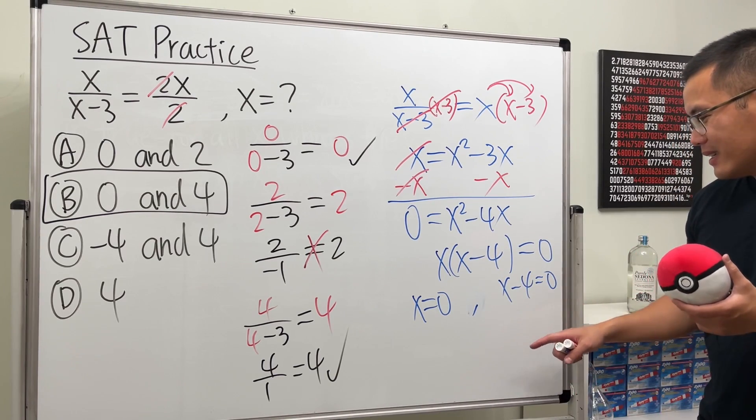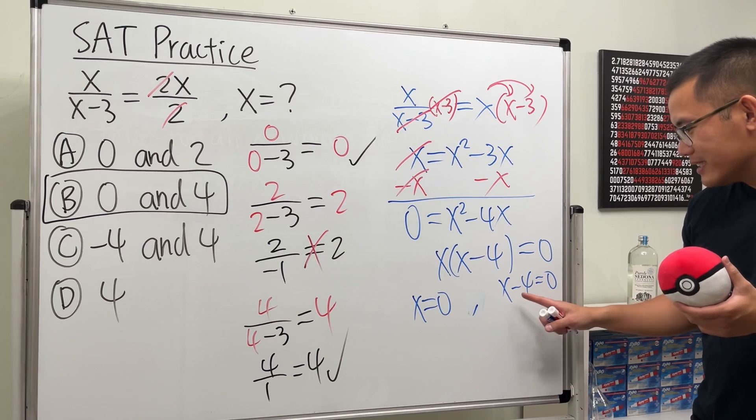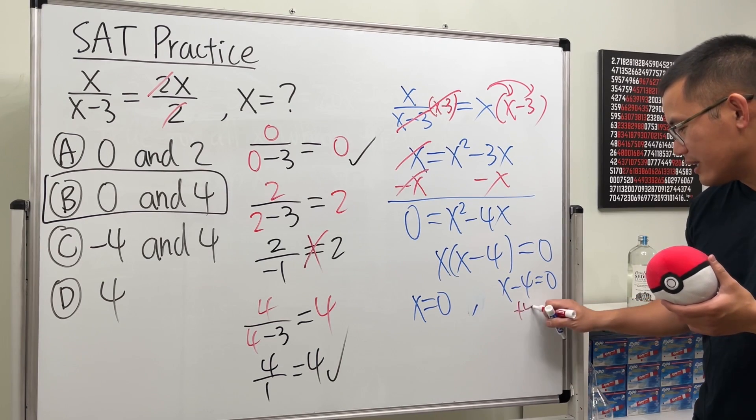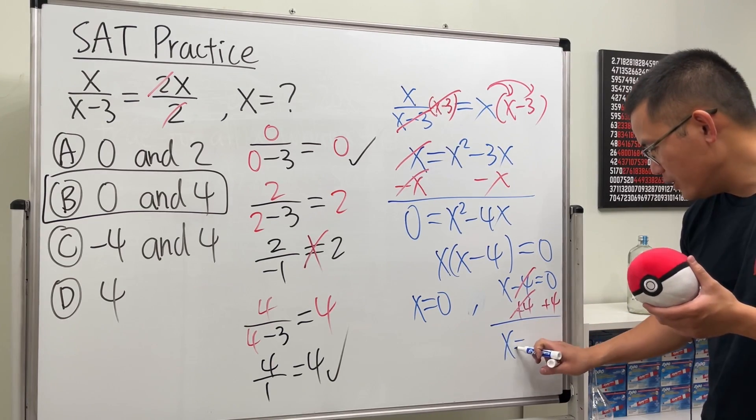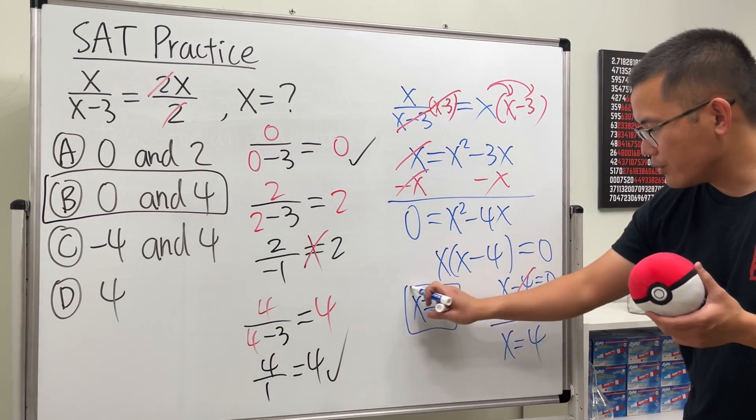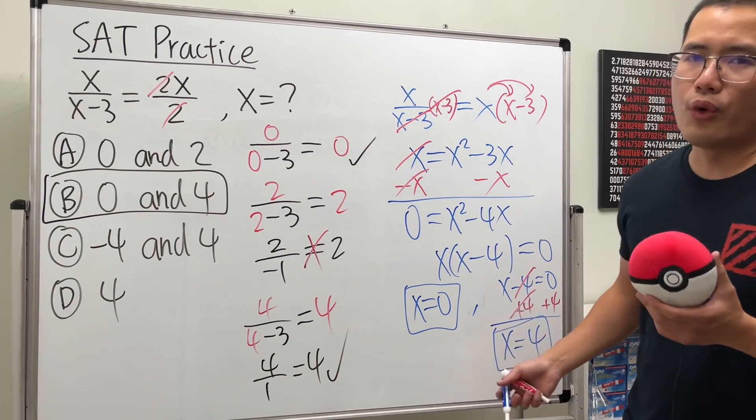For sure. But anyway, this is x minus 4 is equal to zero, just go ahead and add a little four on both sides and you see x is equal to four. Therefore we have two answers, zero and four.